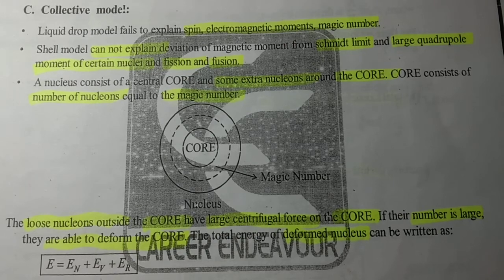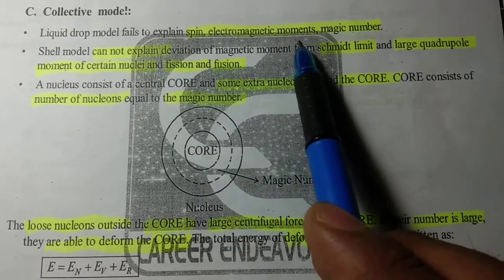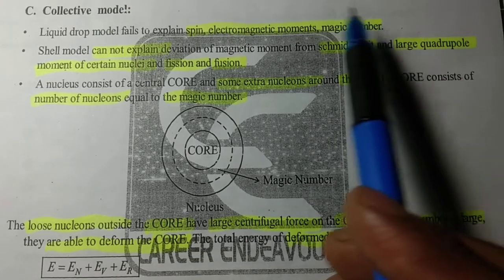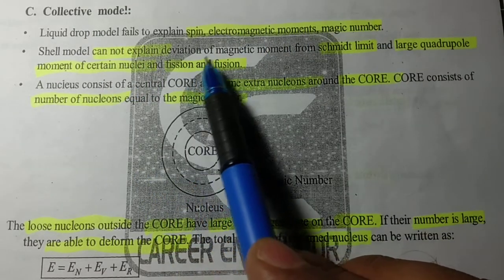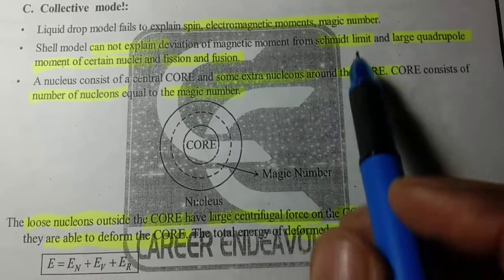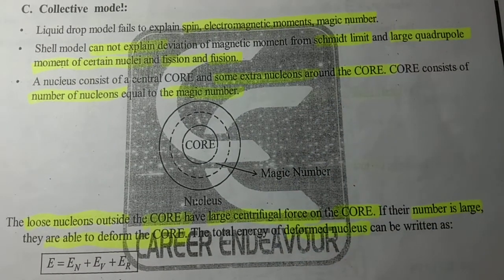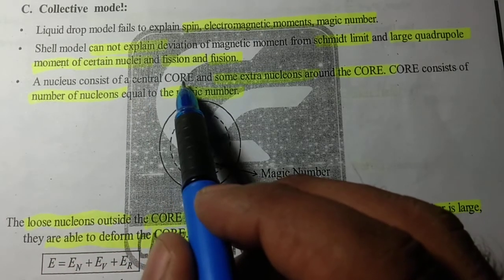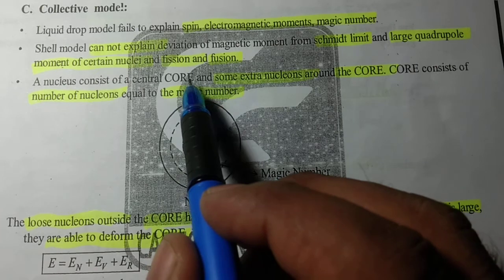Liquid drop model fails to explain spin, electromagnetic moments, and magic number. The shell model cannot explain the deviation of magnetic moment from the limit and large quadrupole moment of certain nuclei, fission and fusion.